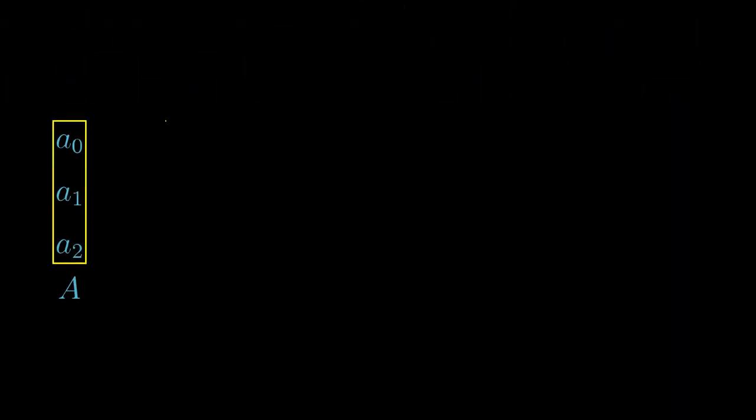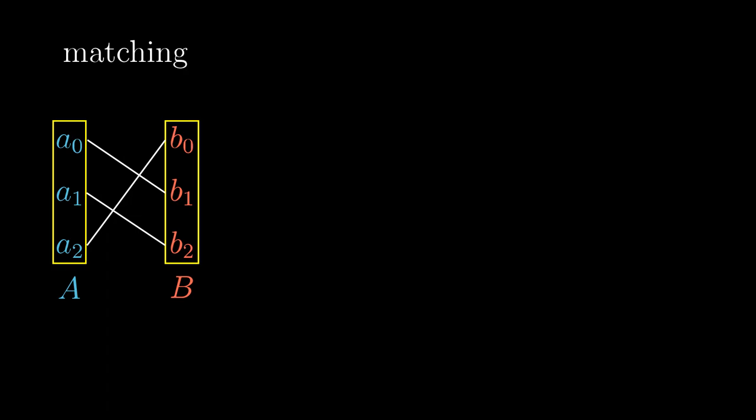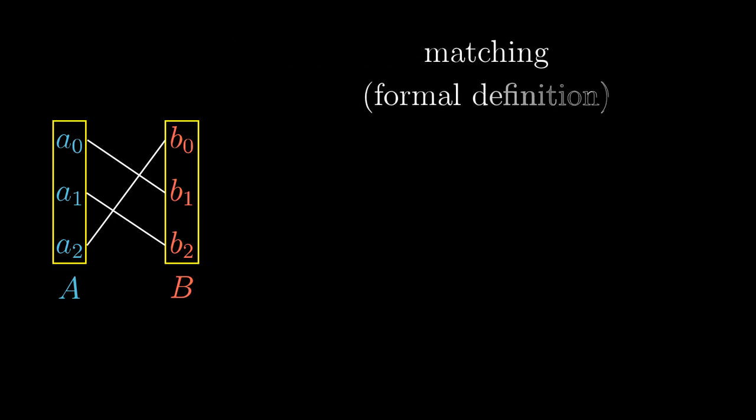We have started this series about set theory by taking two sets and comparing their sizes by matching their elements. If there is a matching between two sets, the two sets are of the same cardinality. But in the world of sets there are only sets so far. The word matching hasn't been invented yet. To talk about matchings in the formal world of sets, we need to define which sets such a matching correspond to.